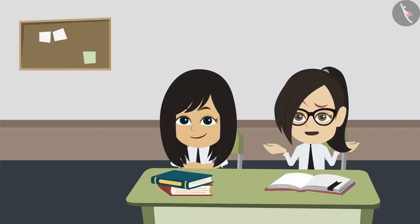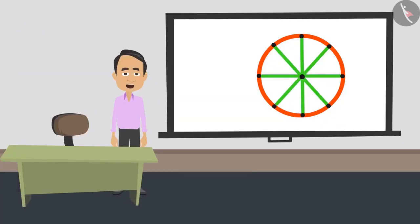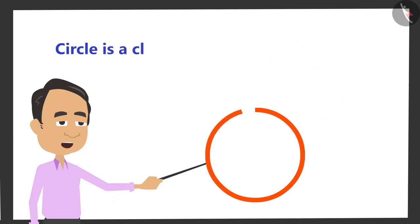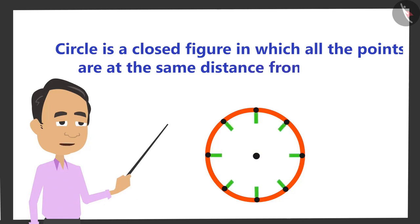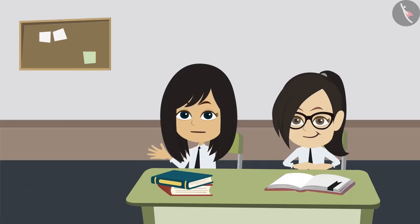But what is the definition of a circle? If you write properly what you have understood, you will get the definition of a circle. Look, circle is a closed figure in which all the points located in it are at equal distance from the center.